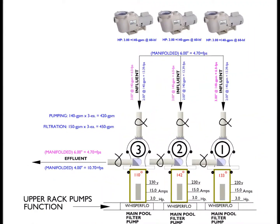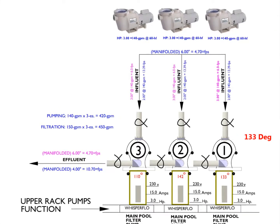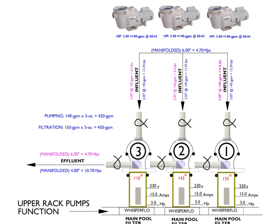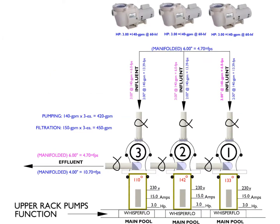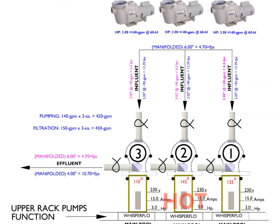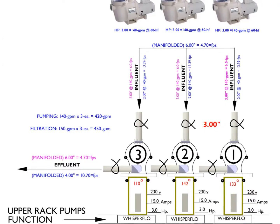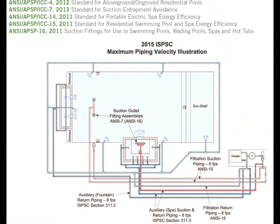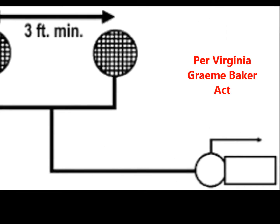Taking a closer look at these pumps, the operating temperature of pump number 1 is 133 degrees, pump number 2 is 142 degrees, and pump number 3 is 110 degrees. Assuming the published manufacturer's flow rates shown on the pump curve data, one possible influence for these pumps running hot corresponds to effluent and influent pipe sizes being out of balance with industry standards for a maximum velocity of 6 feet per second on suction lines and 8 feet per second on return lines, in accordance with the Virginia Graeme Baker Act safety standards.